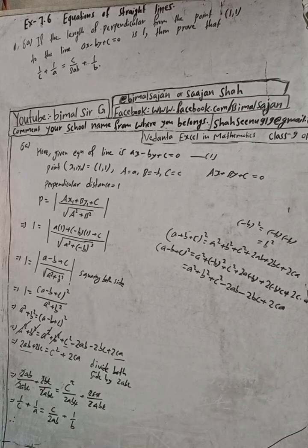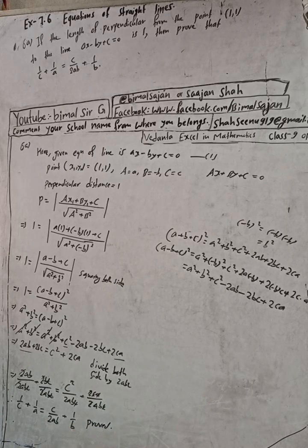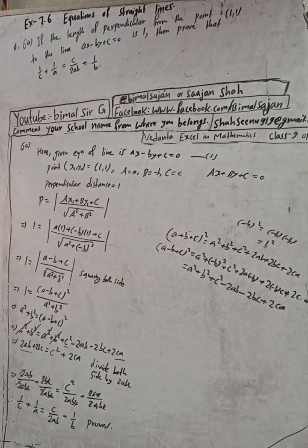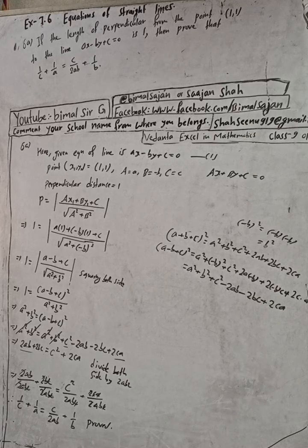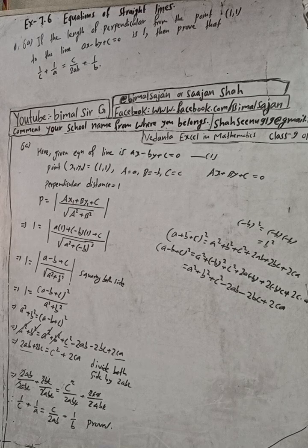Therefore we get: 1/c plus 1/a equals c/(2ab) plus 1/b. This is proved! Therefore this is the required solution. Dear students, if you find this video useful, share it with friends. I have created a playlist of Exercise 7.7 videos — if you demand, I can continue. Keep watching, keep supporting, and wishing you a very happy time. May God bless you and Bimalsarji YouTube channel.